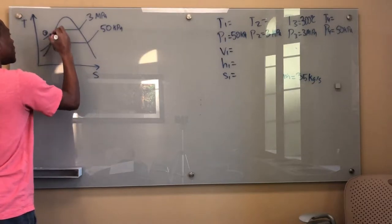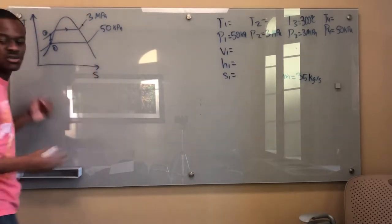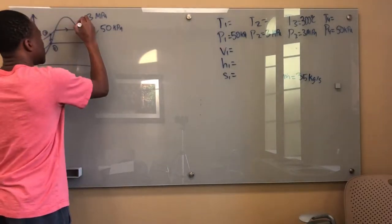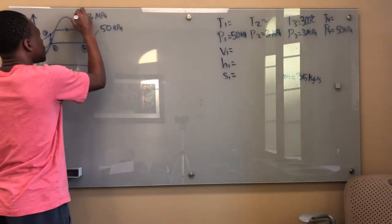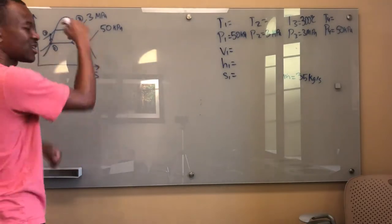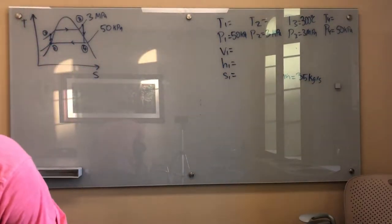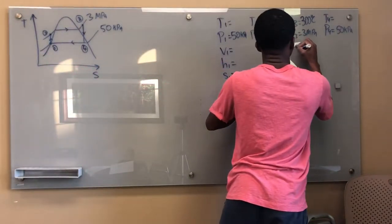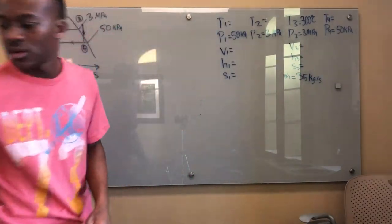Let me draw the TS diagram. I'm dealing with water, so I'll have my dome. There are two pressures — the high pressure constant pressure line and the low pressure constant pressure line. Starting as a saturated liquid at point one, I go straight up for isentropic compression to point two, then follow the high pressure line up to point three. The expansion from three to four ends as a saturated liquid-vapor mixture at point four.